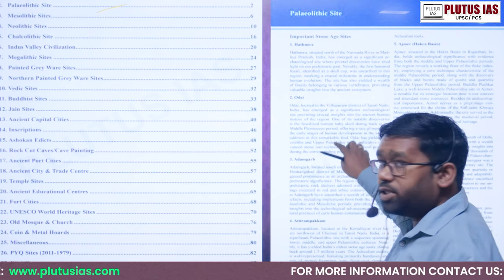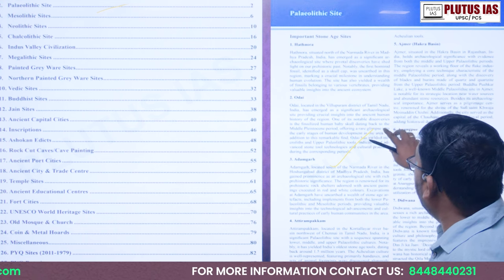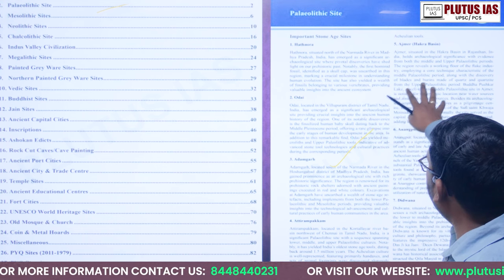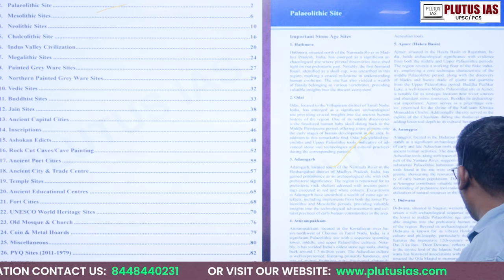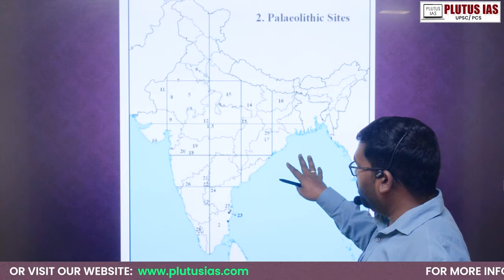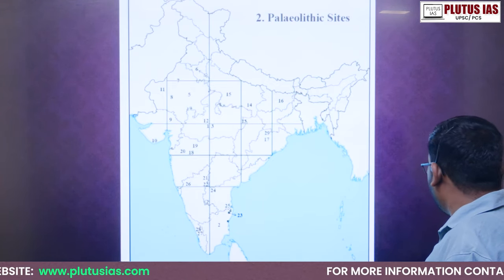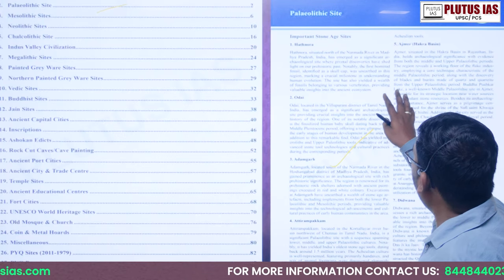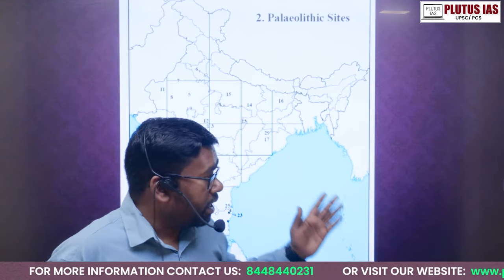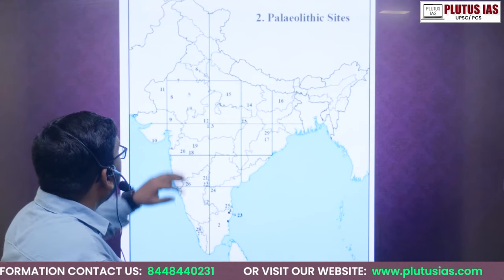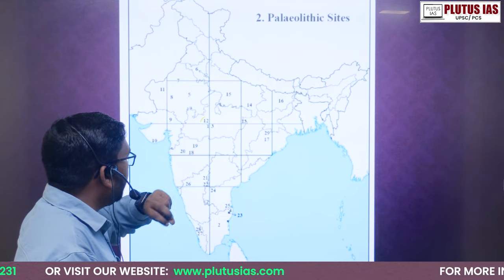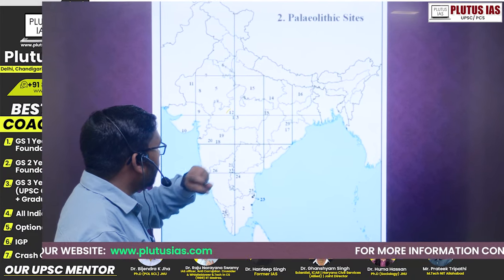You can see the detailed explanation of each site. The important site gets a full explanation, and then in the next page you will find the mapping. As per the serial number mentioned in the chapter, paleolithic sites have been included on the map. As you can see in this map, we have serial numbers — for example, Bhimbetka and Adamgarh are the important sites included.